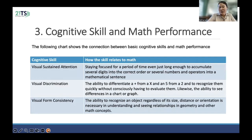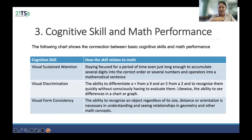In the background table, you can see the relationship between basic cognitive skills and math performance. Visual sustained attention refers to the ability to focus on a period of time — even just long enough to sequence several digits in the correct order, or several numbers and operators into a mathematical expression. Visual discrimination is the ability to identify or distinguish between two similar items, or to recognize them quickly without consistently having to evaluate them — like the ability to see differences in a chart or group. Visual form consistency refers to the ability to recognize an object regardless of its size. Distance and orientation are necessary in understanding and seeking relationships in geometry and other math subjects.